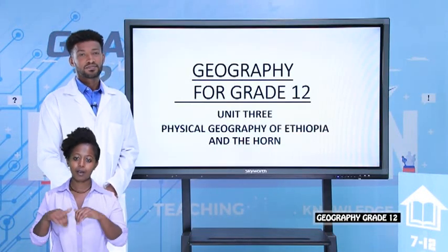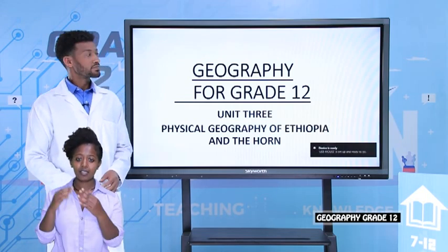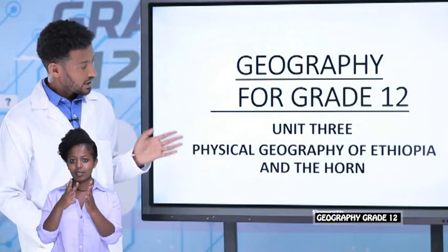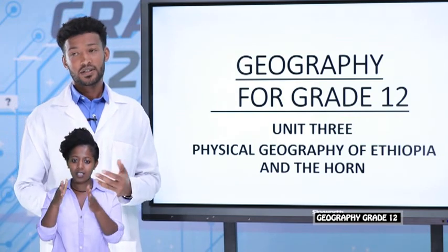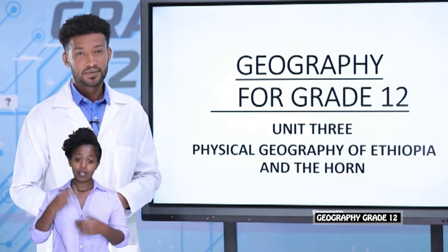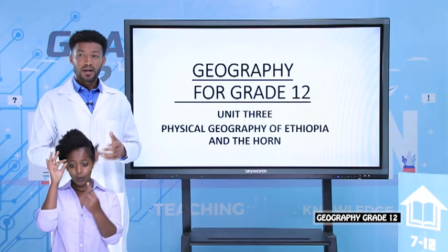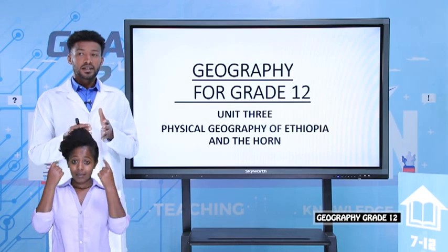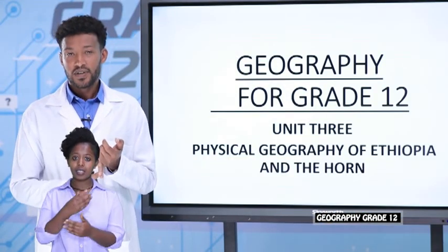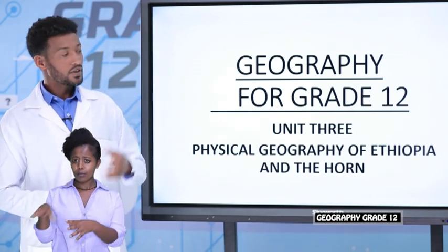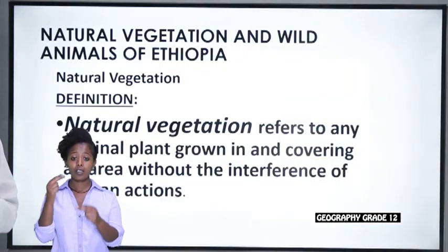Hello students, I'm Joseph and I'm going to present geography for grade 12. This lesson we are going to see chapter 3: Physical Geography of Ethiopia. Under this unit our main focus is on natural vegetation, soil, and the wild animals of Ethiopia. The main objective of this subtopic is to make you understand the natural vegetation of Ethiopia and how to conserve the wild animals, natural vegetation, and soil of Ethiopia.